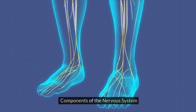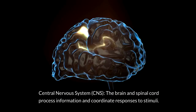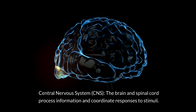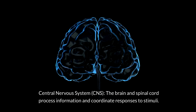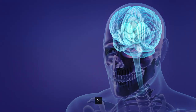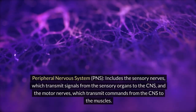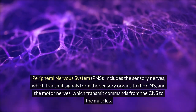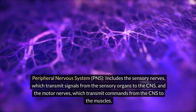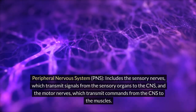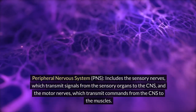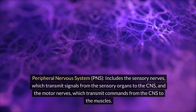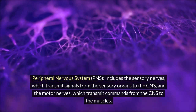Components of the nervous system. 1. Central nervous system (CNS): the brain and spinal cord process information and coordinate responses to stimuli. 2. Peripheral nervous system (PNS): includes the sensory nerves, which transmit signals from the sensory organs to the CNS, and the motor nerves, which transmit commands from the CNS to the muscles.